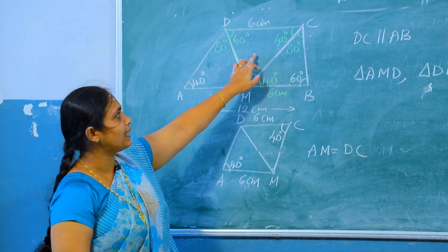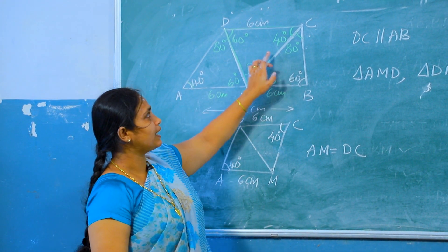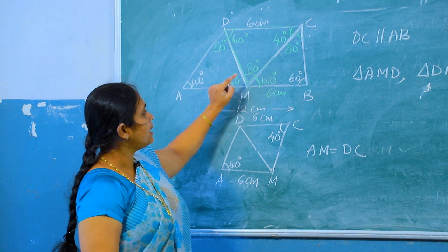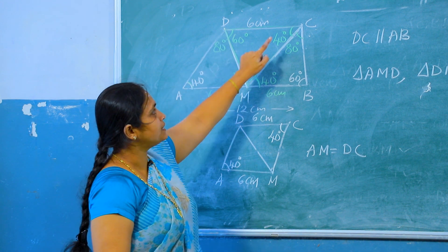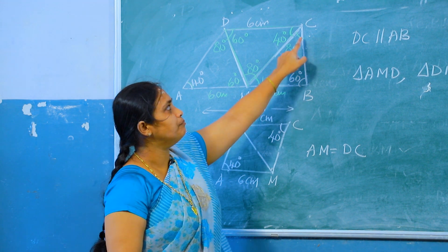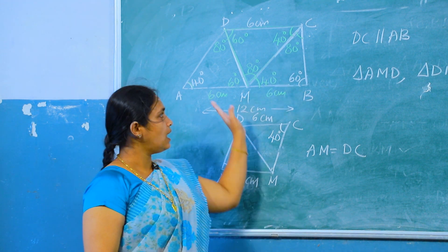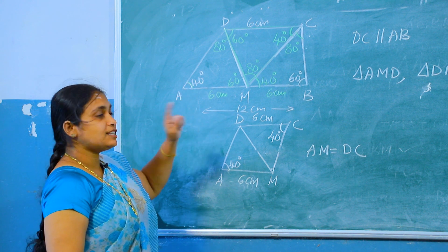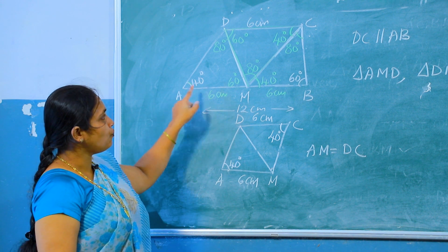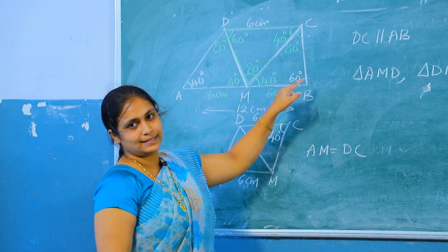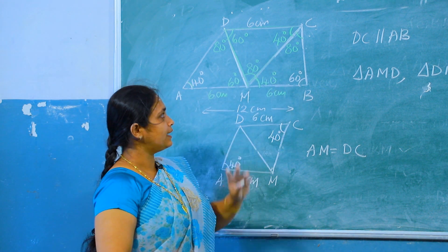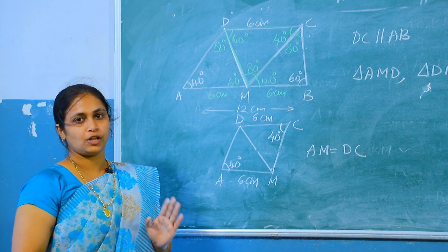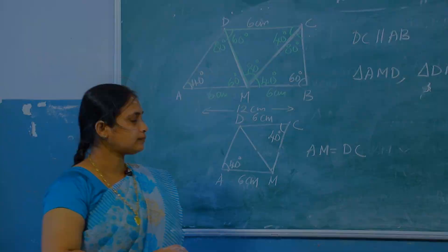Therefore, all angles of triangle AMD, triangle DMC, and triangle MBC are found. It is already proved that both quadrilaterals AMCD and MBCD are parallelograms.